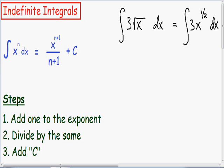Step number one is we want to add one to the exponent. Since we have a one-half exponent in our integral, we've got to add one to that if we integrate it. So one-half plus one is three over two. After we integrate this, instead of 3x to the one-half, it is going to be 3x to the three over two.